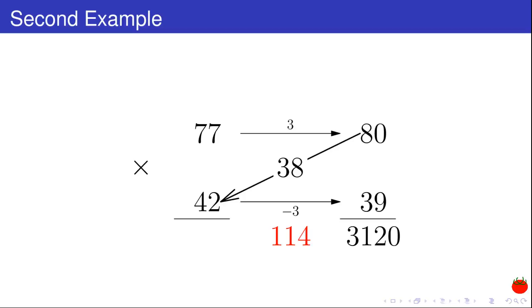And I multiply 38 with the offset 3 that I chose at the beginning. And I get 114. I add the two products and I get 3,234.